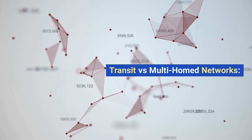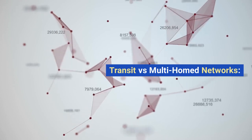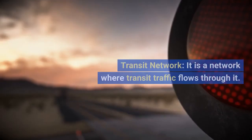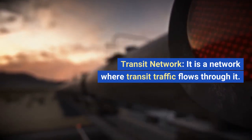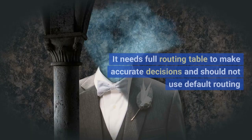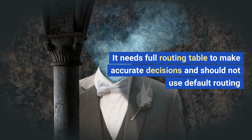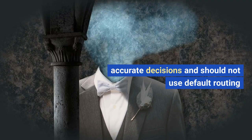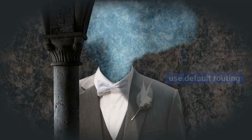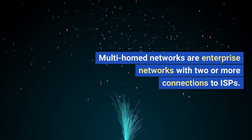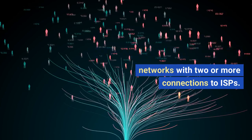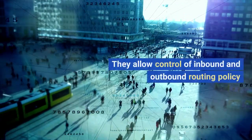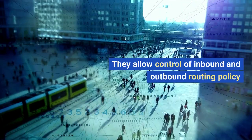Transit versus multi-homed networks: a transit network is one where transit traffic flows through it. It needs a full routing table to make accurate decisions and should not use default routing. Multi-homed networks are enterprise networks with two or more connections to ISPs, and they allow control of inbound and outbound routing policy.